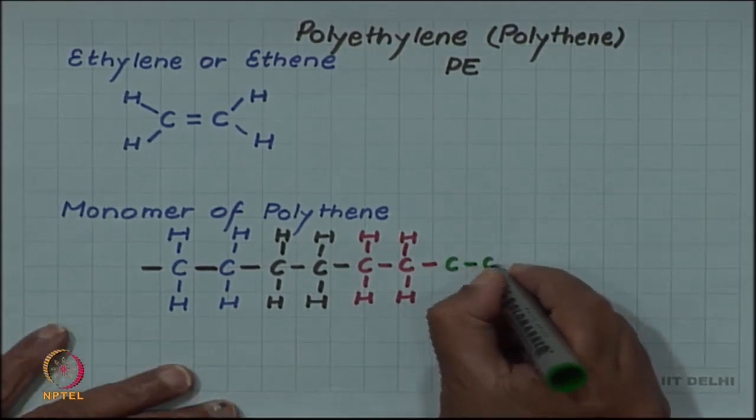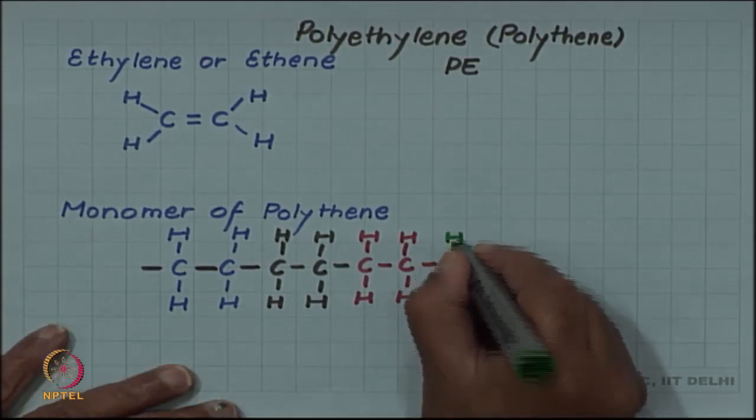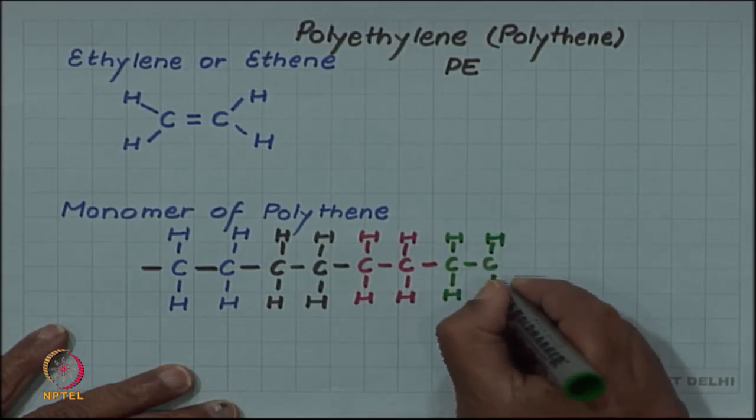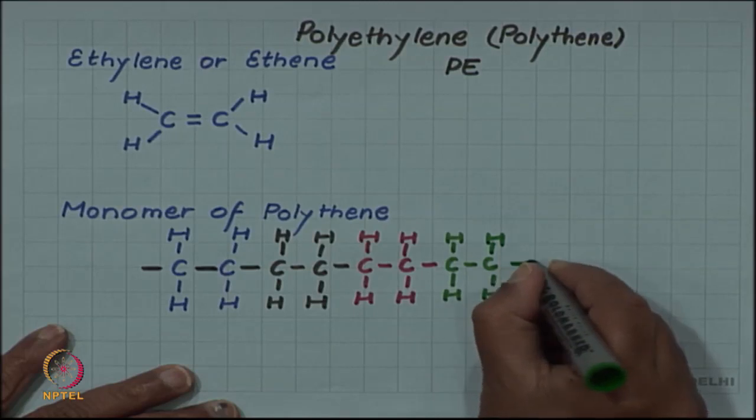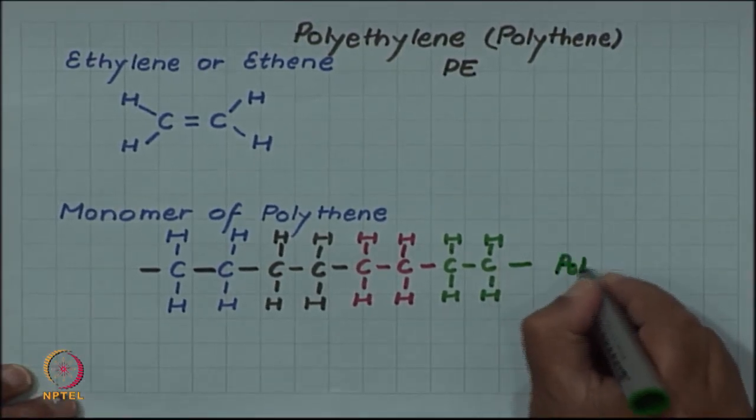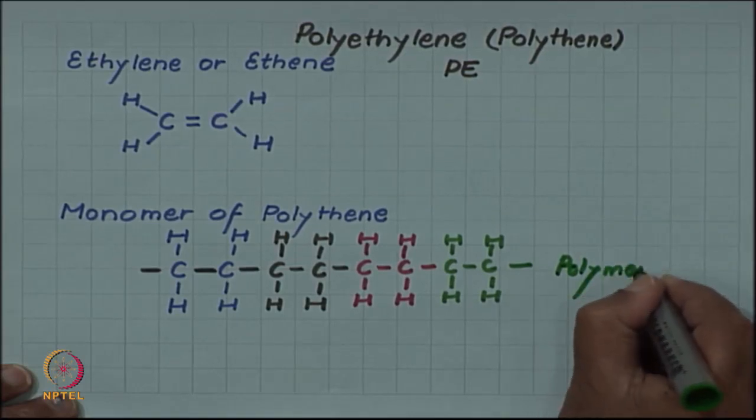And if this process continues, you can see that you can have many monomers attached to a single chain, and that is what you have then - a polymer.